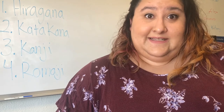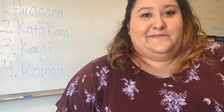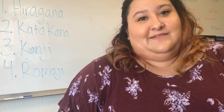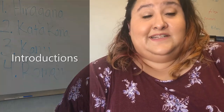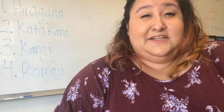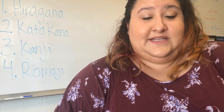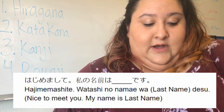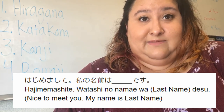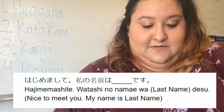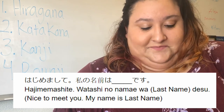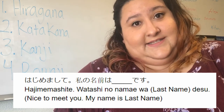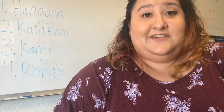Now that you know the basics and pronunciation, let's go over some specific phrases that'll help you before you start learning Japanese while attending AGU. A basic introduction in Japanese goes like this: Hajimemashite. Watashi no namae wa, insert your last name, desu. For example: Hajimemashite. Watashi no namae wa Ibarra desu. Go ahead and try on your own.